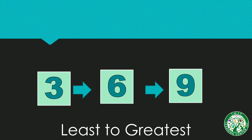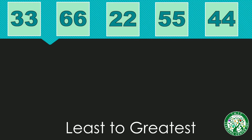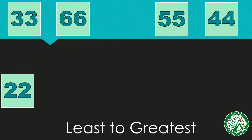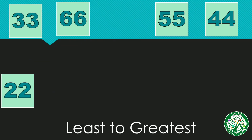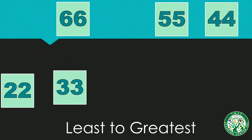Did you get that? Okay, let's move on to a more complex example. We have here five numbers: thirty-three, sixty-six, twenty-two, fifty-five, and forty-four. Let's order them from least to greatest. First we have number twenty-two, next we have thirty-three.